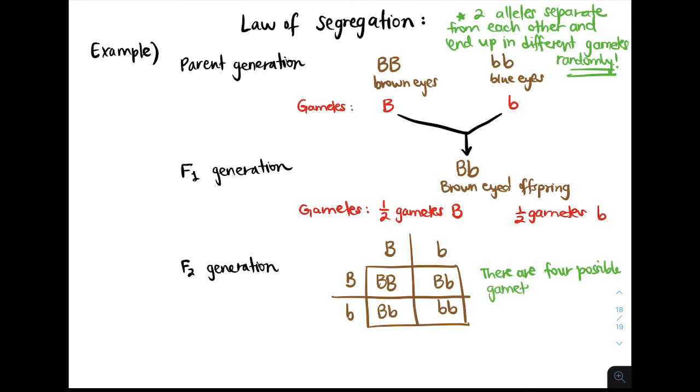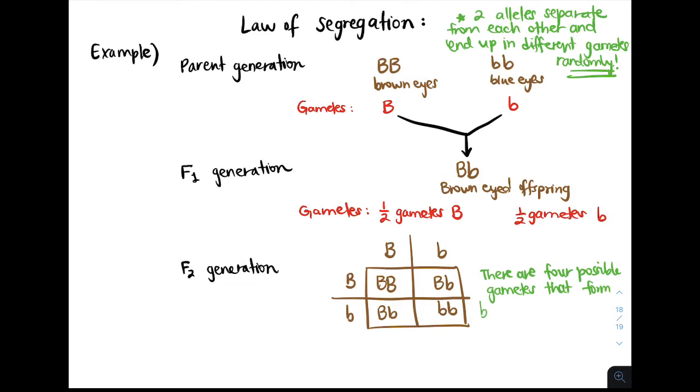We can have homozygous dominant offspring, heterozygous, or homozygous recessive. And this is because alleles segregate during gamete formation.